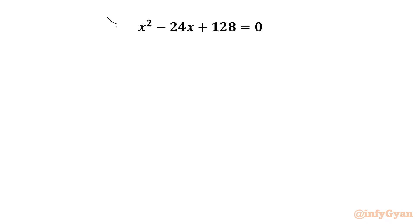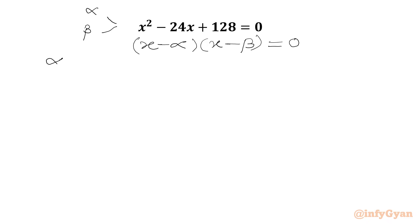I will consider the roots of the given quadratic equation as alpha and beta. Then we can write our quadratic expression as x minus alpha times x minus beta. Using Vieta's method, we can write the sum of roots equal to minus b over a, which is minus of minus 24 over 1, giving us 24. The product of roots is c over a, which gives us 128.